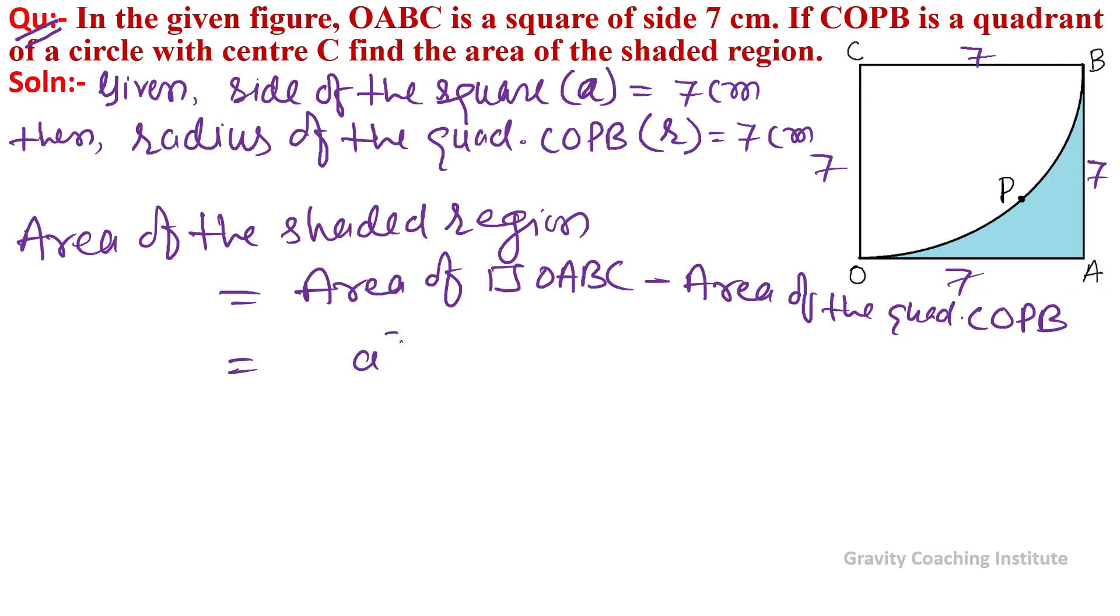This equals side squared minus one-fourth pi r squared. So it equals 7 squared minus one-fourth times 22/7 times 7 squared.